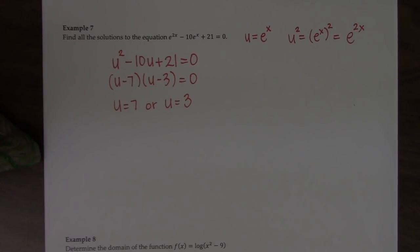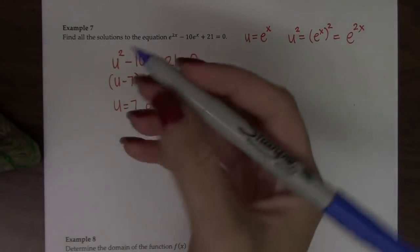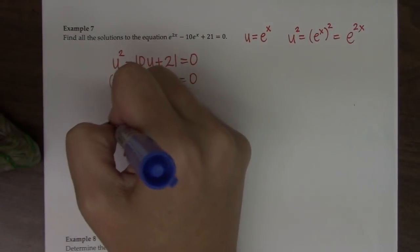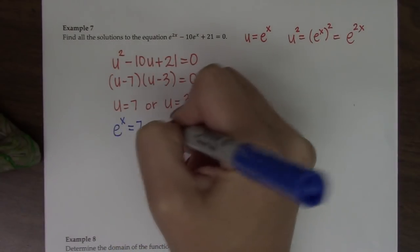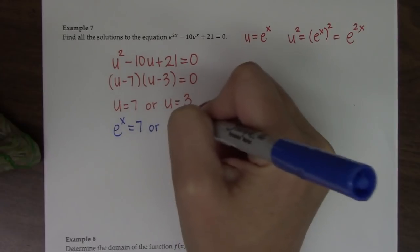So now that I've gone as far as I can go with my variable u, I can plug back in what u was standing for the whole time. So u was e to the x. So e to the x equals 7 or e to the x equals 3.